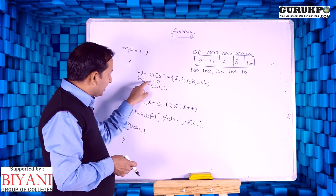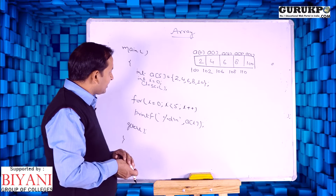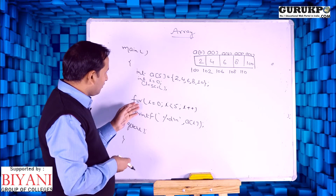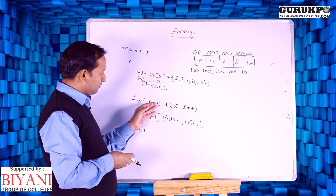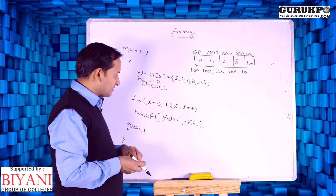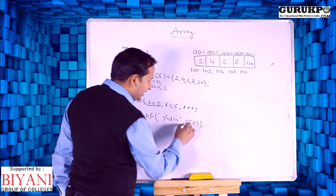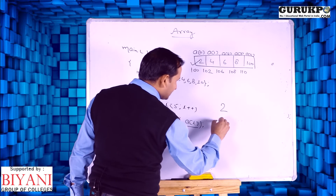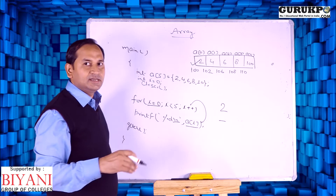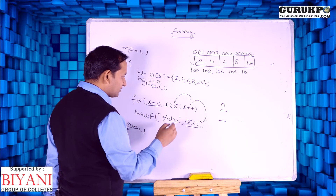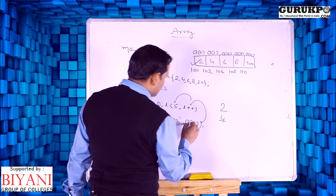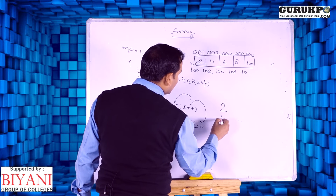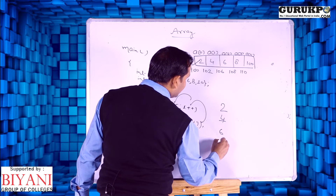We are taking an integer variable i with value 0. We use the clear screen function to clear previously displayed output. Now we print these 5 values using a loop from i=0 to i less than or equal to 5, incrementing i by 1. When i is 0, it prints a[0] whose value is 2, then i increments. When i is 1, condition satisfied, a[1] is 4. Then i becomes 2, a[2] is 6, similarly 8 and 10. So we can easily print all elements using an array.